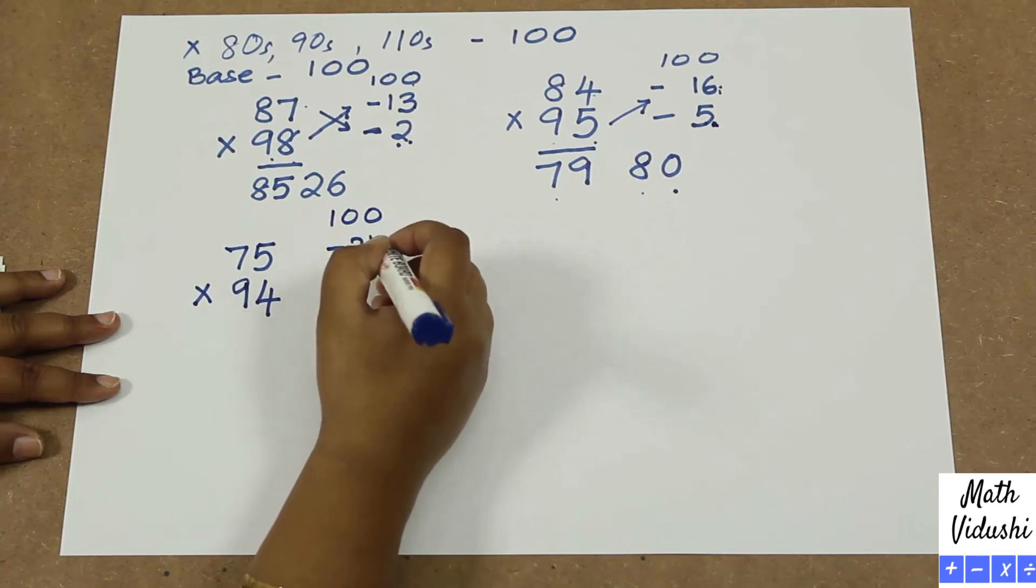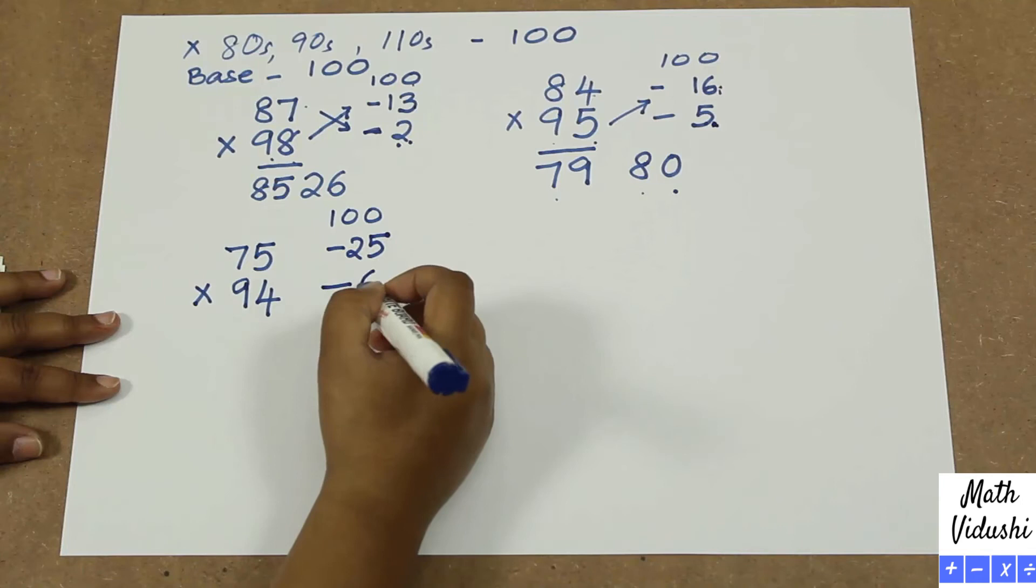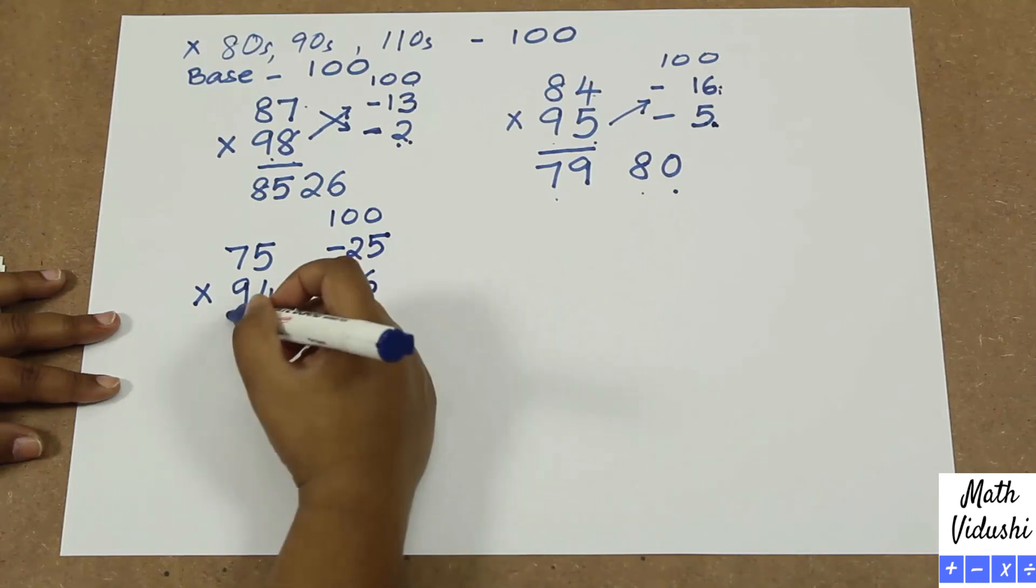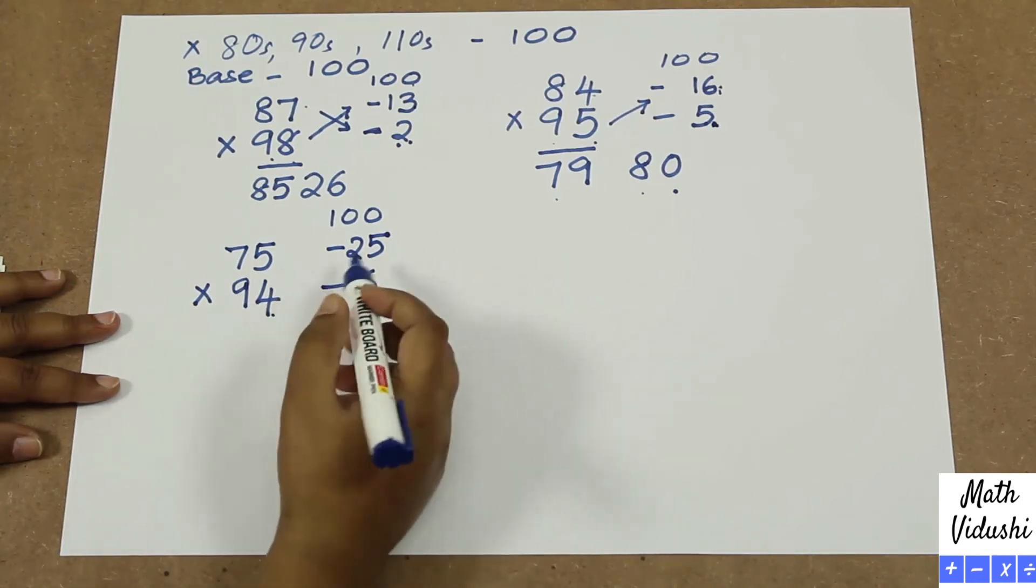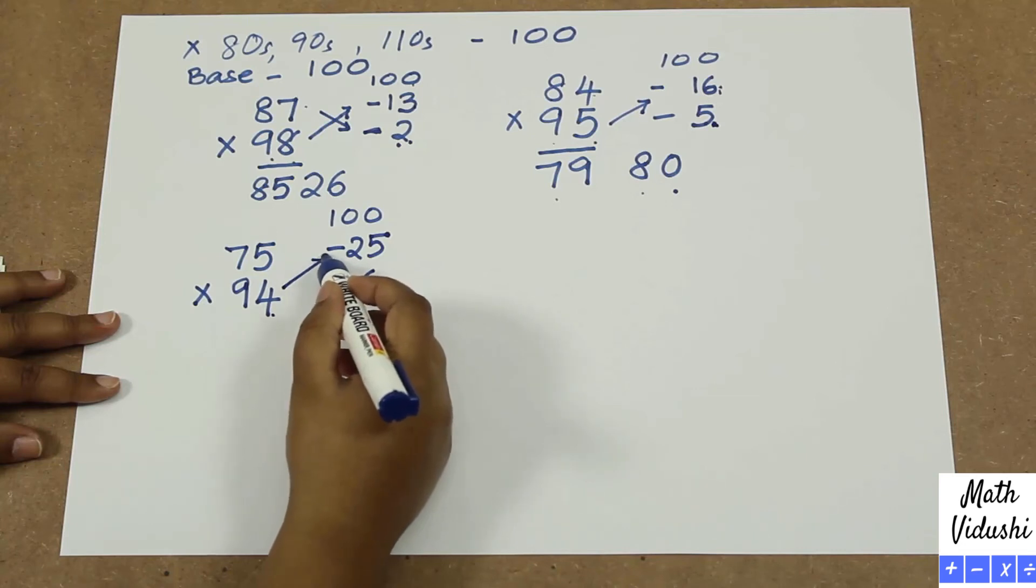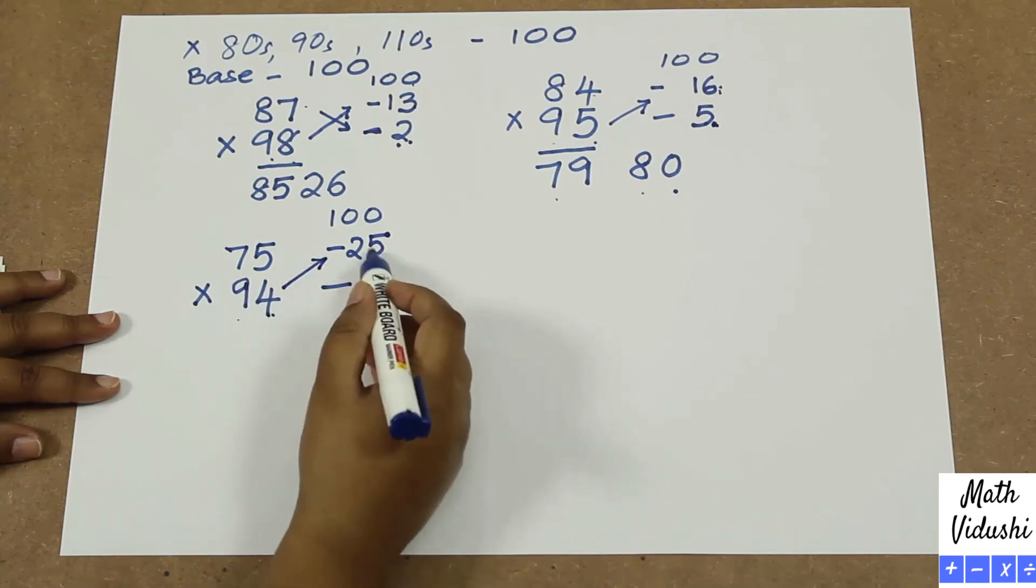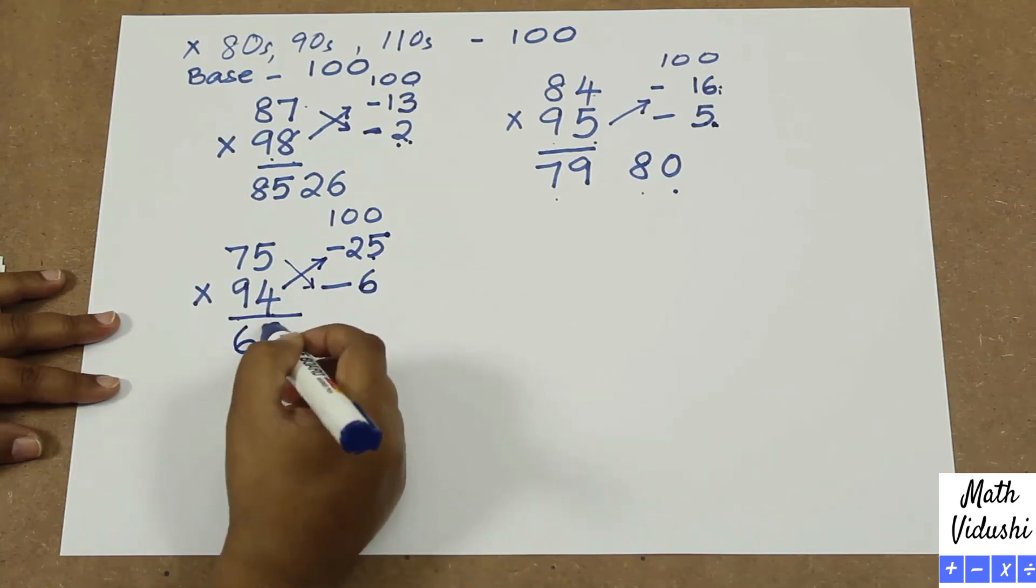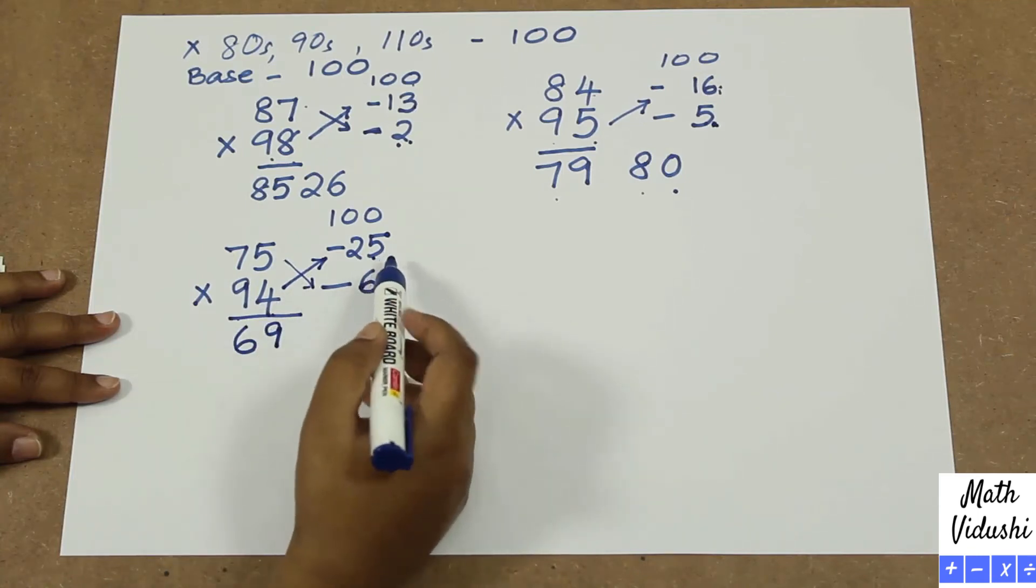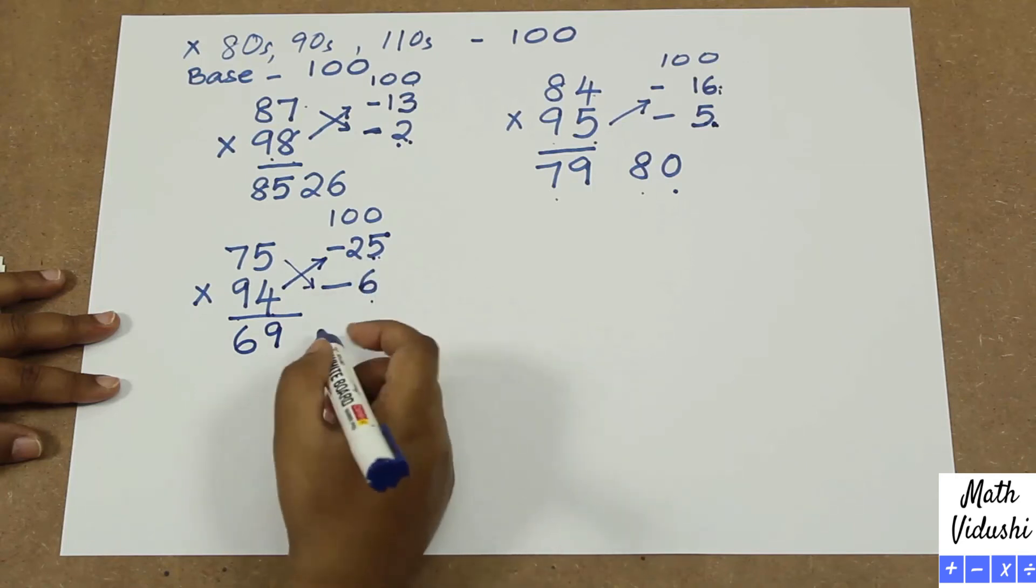75 multiplied by 94. So 100 minus 25 is 75. 100 minus 6 is 94. So now what do you do? You either do 94 minus 25, or you do 75 minus 6. Both will give you 69. But 25 into 6 gives you 150.